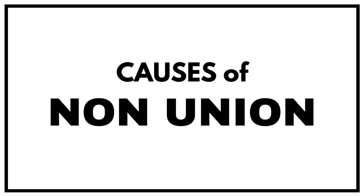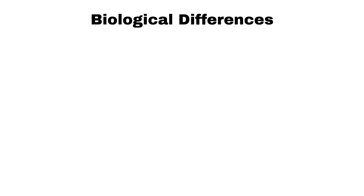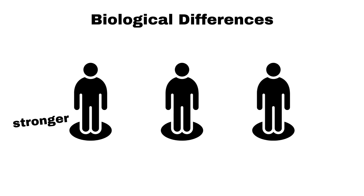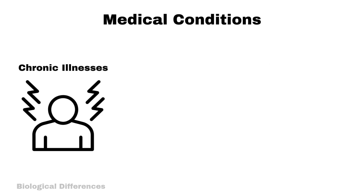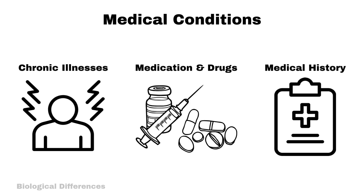The causes of nonunion can be broadly classified into two categories. The first is patient-related factors — factors that originate from the patient's own biological or lifestyle characteristics. Key patient-related factors include individual biological differences, as some people naturally have stronger bone regeneration while others heal more slowly. Medical conditions such as diabetes, use of drugs like steroids, and history of radiation therapy are proven risk factors that disturb the body's ability to regenerate bone.